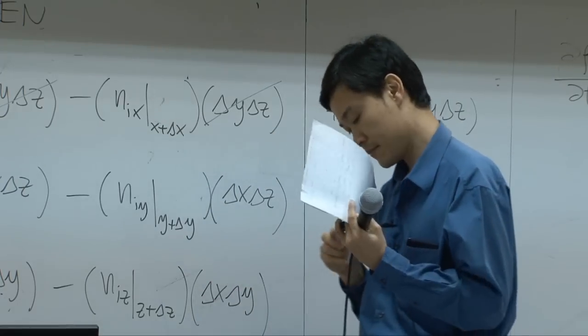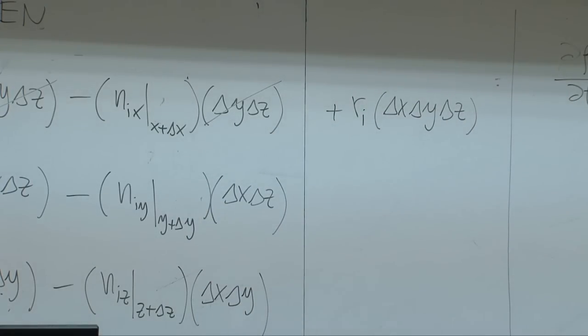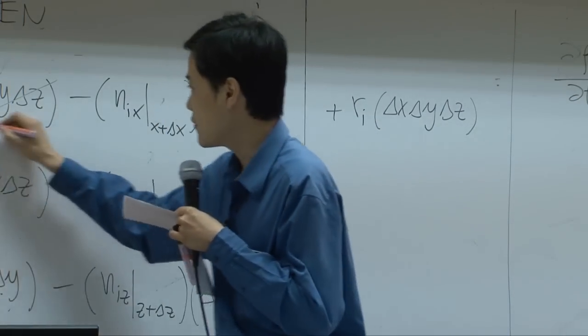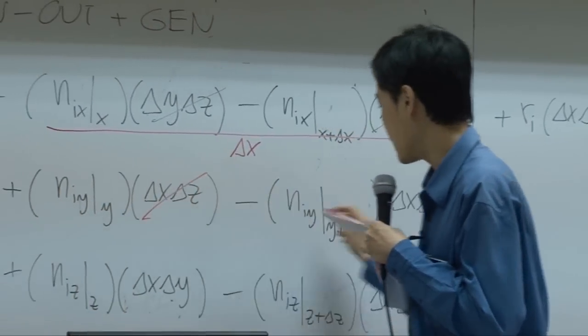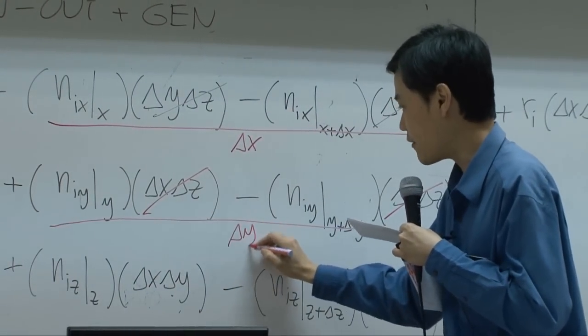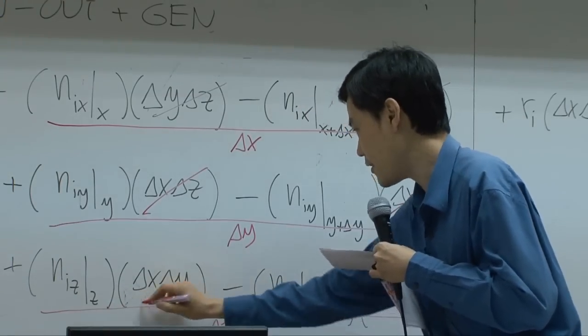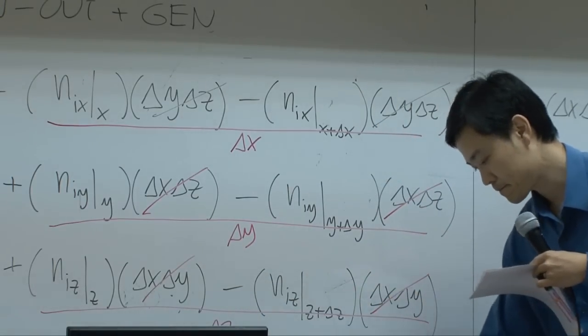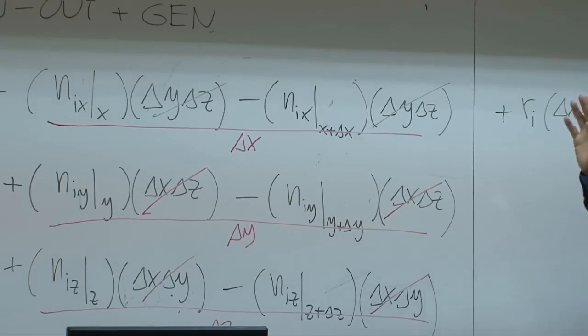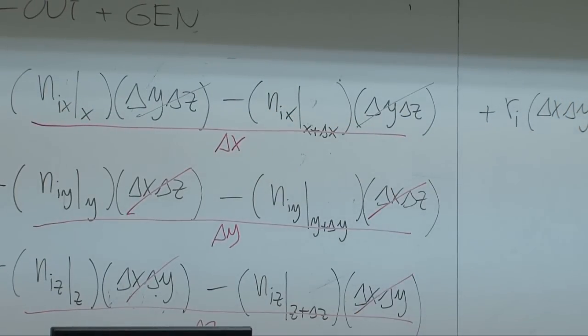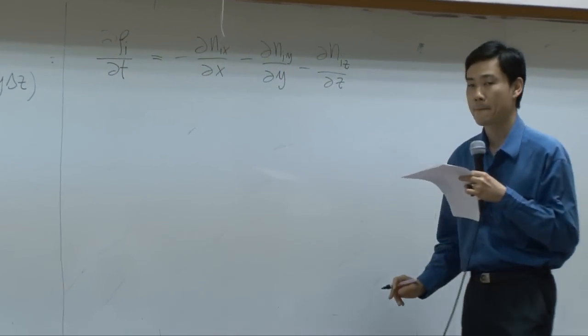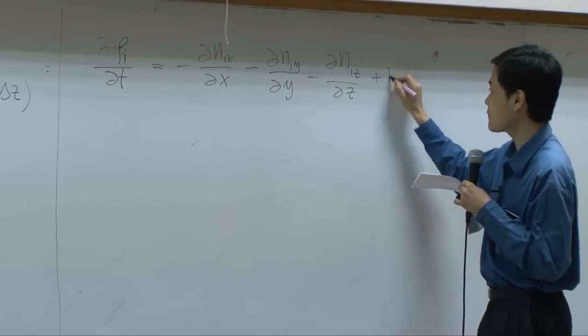As a result, you will have divided by delta x. This term would be cancelled, you will have delta y down there and delta z down there. Then if you take a limit as delta x, delta y, delta z approaching zero, this term would turn to differentiation: minus d(n_ix)/dx, minus d(n_iy)/dy, and d(n_iz)/dz. And then the last term you will have r_i.